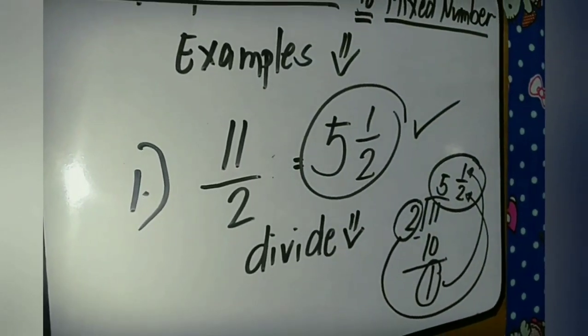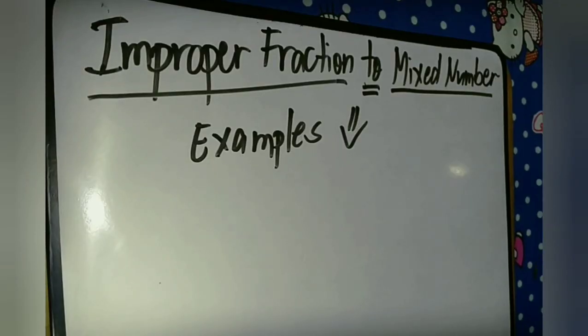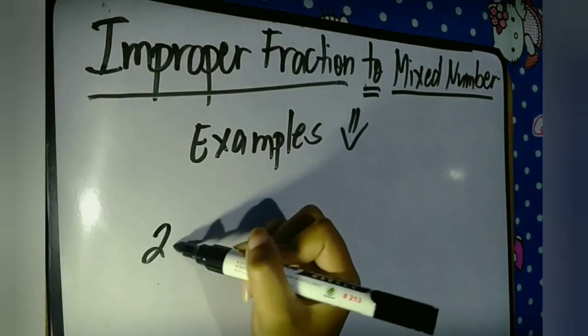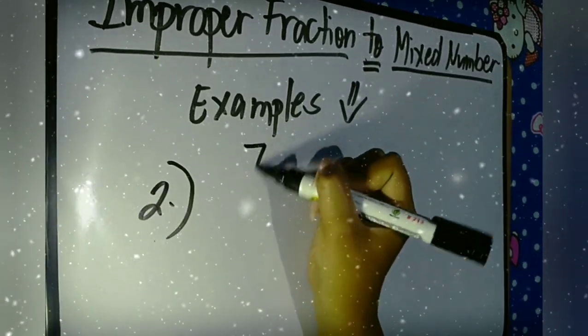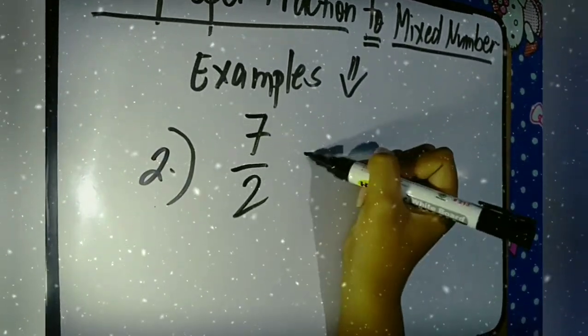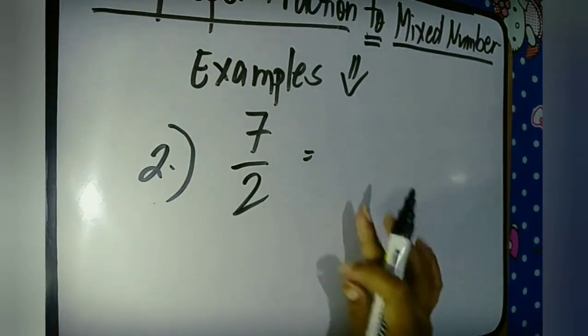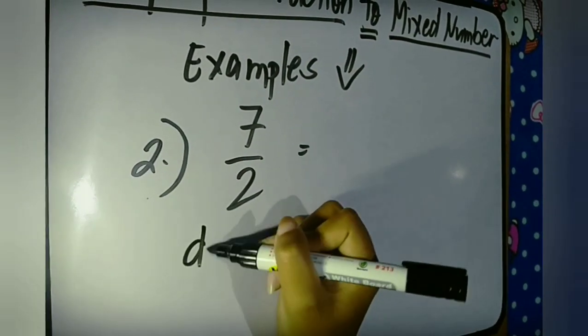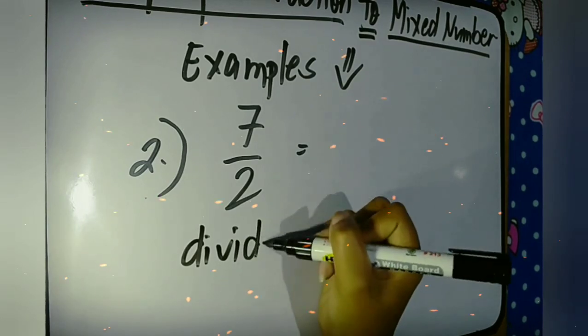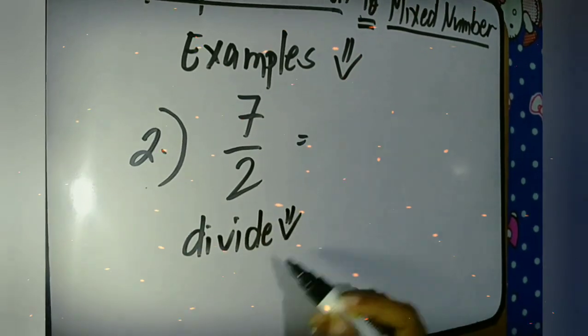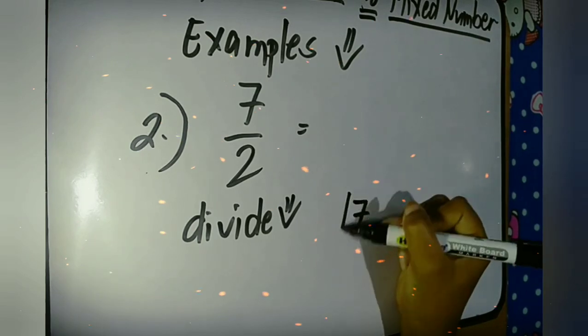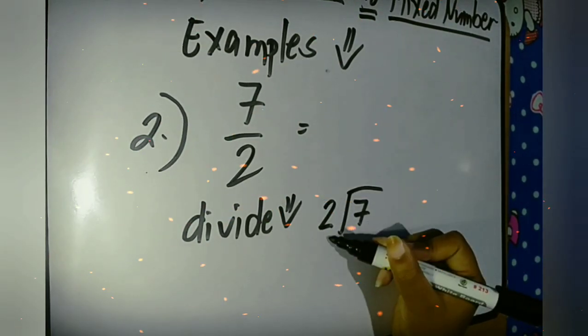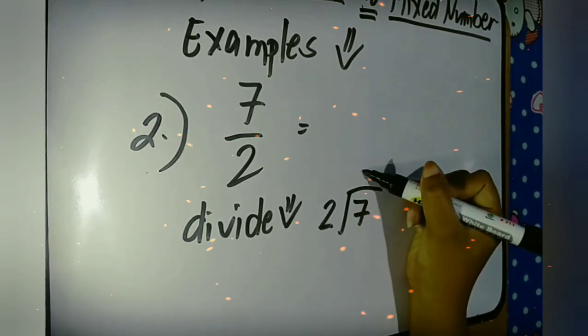That's right! Let's have example number 2. The improper fraction 7 over 2. So again, we will just divide to get its mixed number. 7 divided by 2. And 7 divided by 2, the answer is 3.